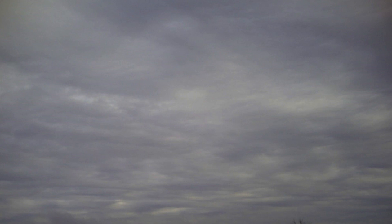Altostratus clouds — strata means layers. They spread over thousands of square miles and are always linked to light rain or snowfall. If it is lightly raining, you should think it is an altostratus cloud. They don't give heavy rain; they will give only light rain. But if they merge into nimbostratus clouds, they will give heavy rain as well. They are always gray in color and spread over long distances.